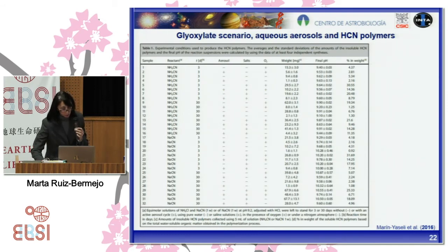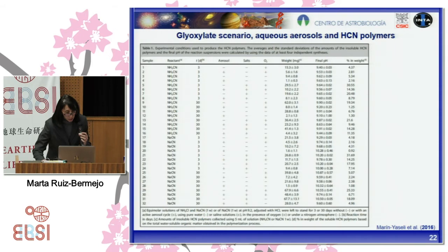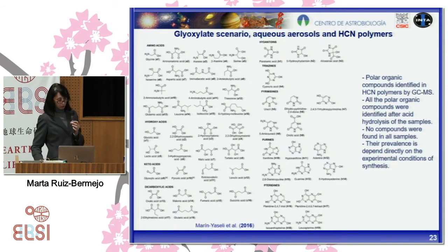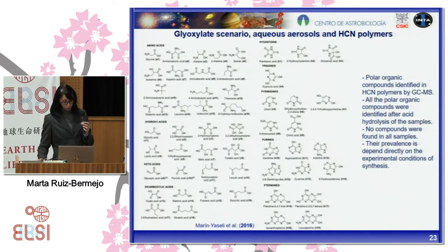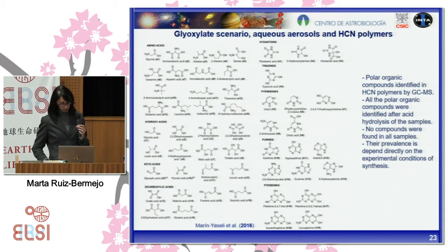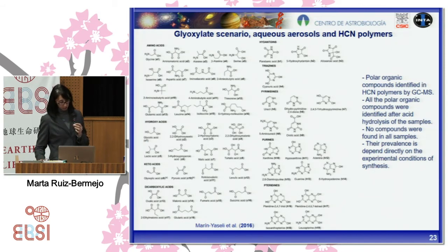A total of 32 experimental conditions were explored. The starting reactant, reaction time, presence of aqueous aerosol, presence of salt, and oxygen were evaluated for the production of polar organic compounds. The polar organic compounds were identified in these new hydrogen cyanide polymers by GC-MS. All polar organic compounds were identified after acid hydrolysis of the sample using the derivatization method described above. Not only the insoluble hydrogen cyanide polymers were analyzed, but also the supernatants were studied. Not all compounds were found in all samples — their prevalence depended on the experimental conditions of synthesis.